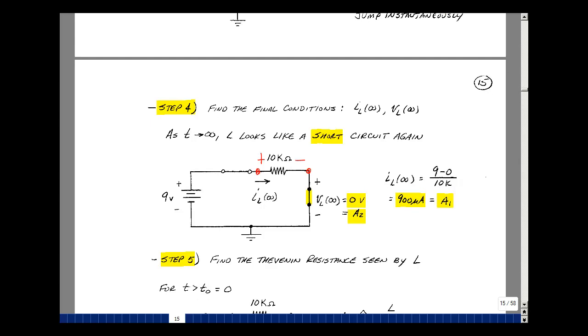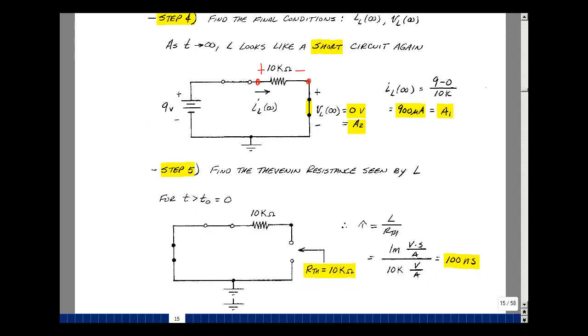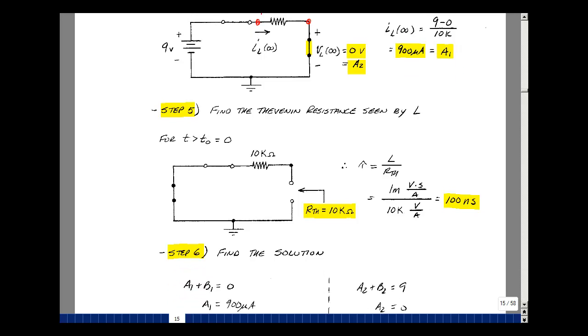So now I can solve for b1 and b2. Before we do that, let's find the Thevenin resistance seen by this inductance. Set all the independent sources equal to 0. There's a voltage source here, so we're going to short it. Switch has changed state at t equals t0. We're looking at it after that event has occurred. And so you just see the 10k resistor. t0 is equal to L over R-thevenin.